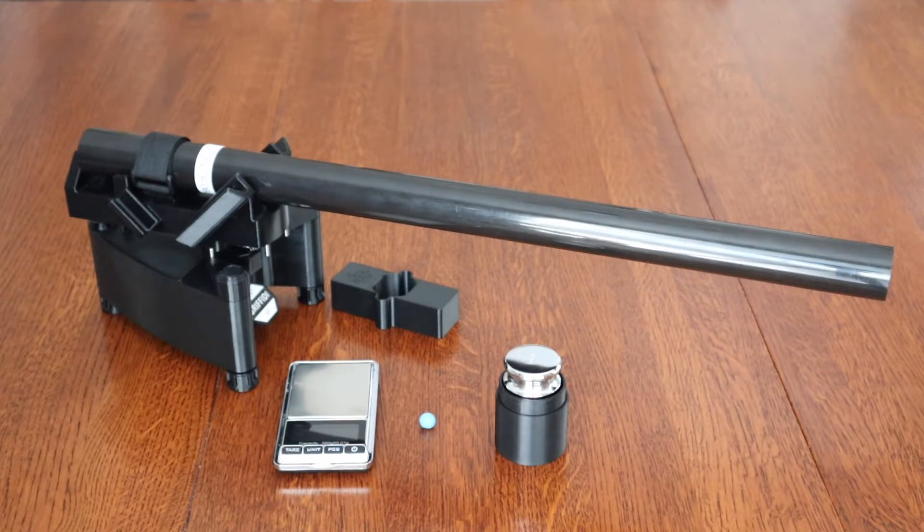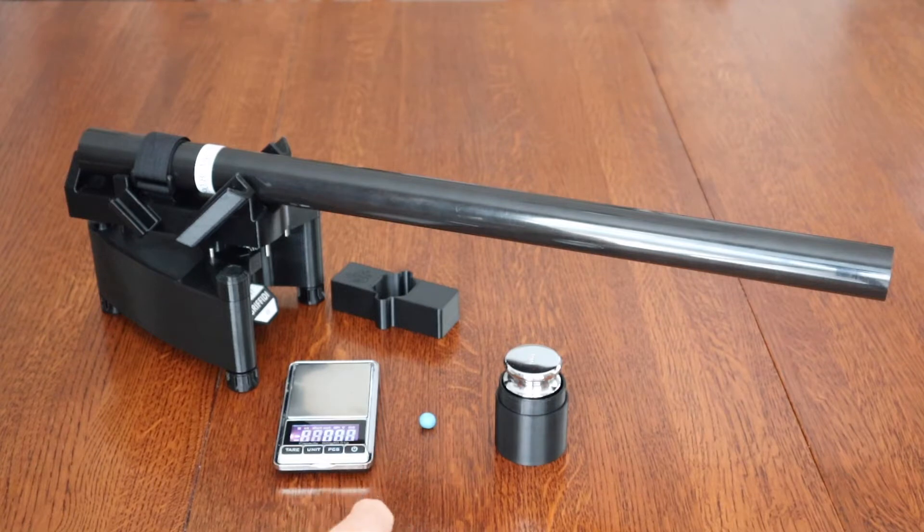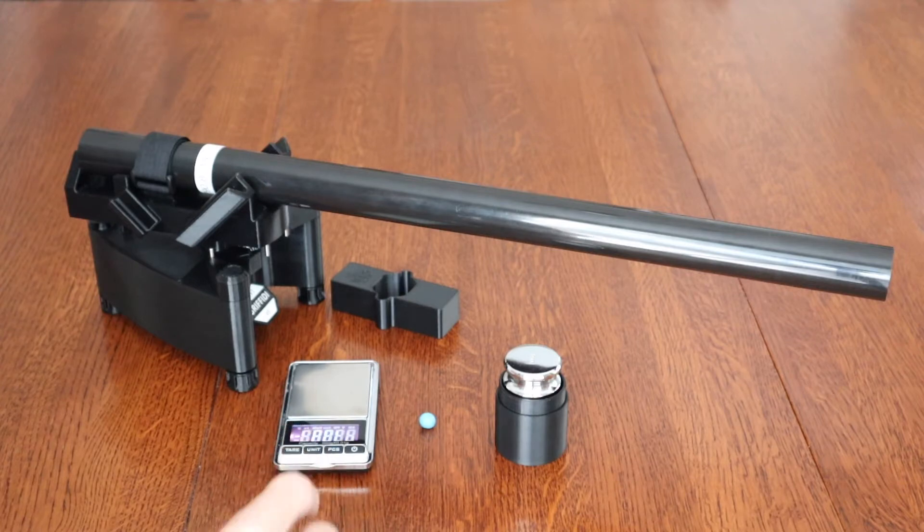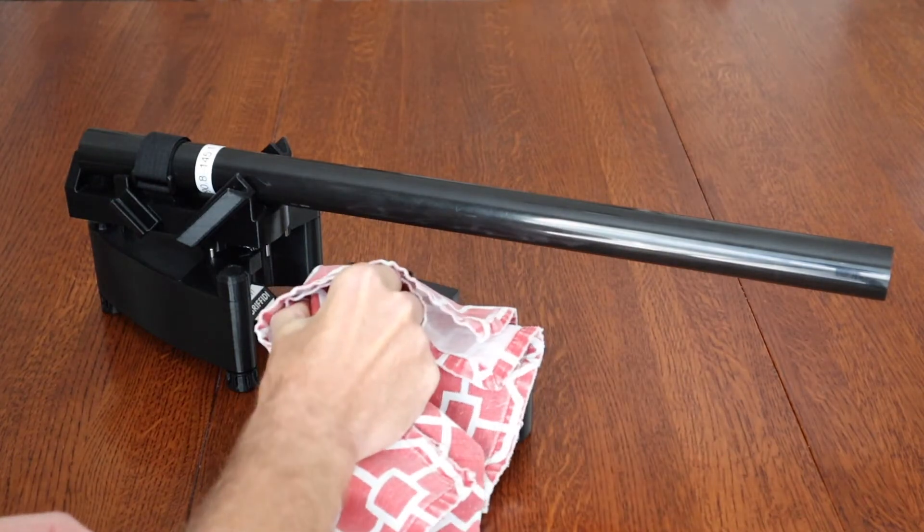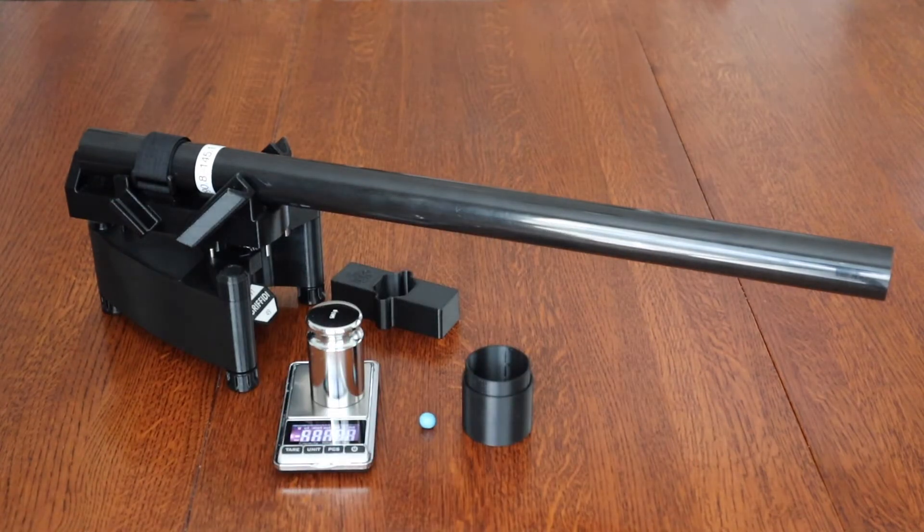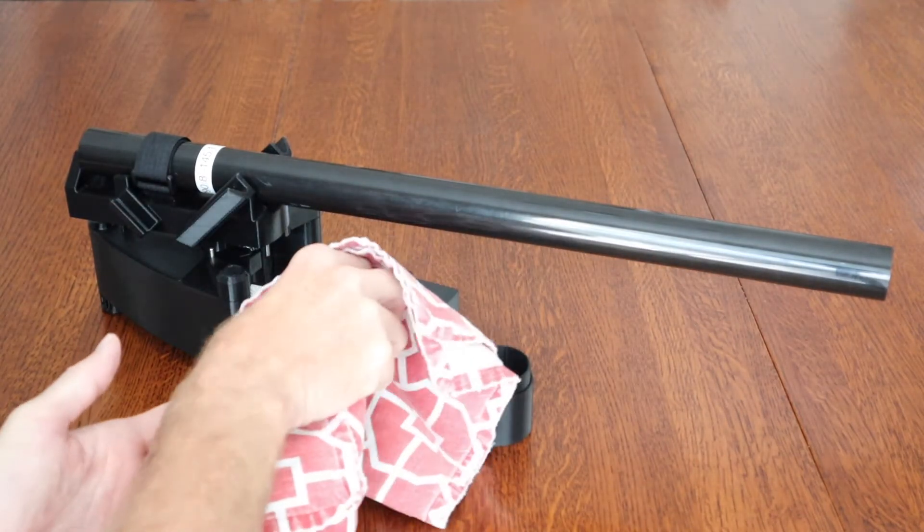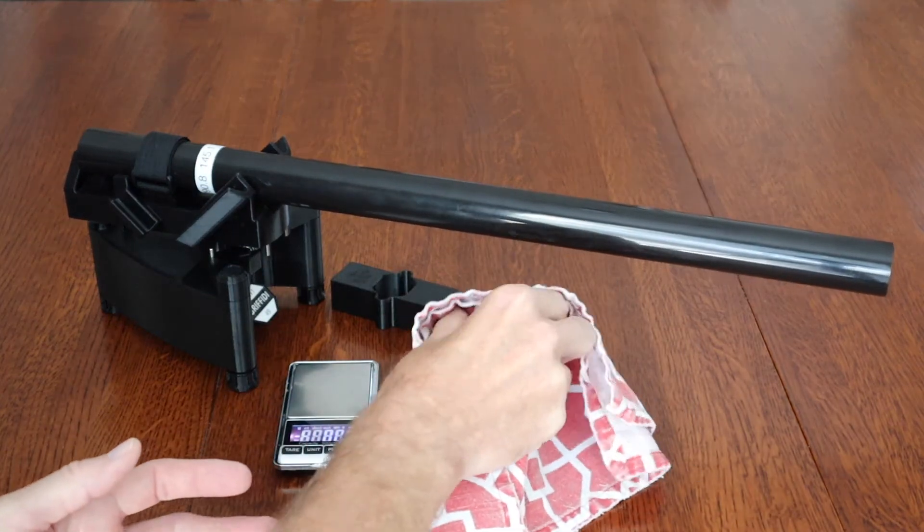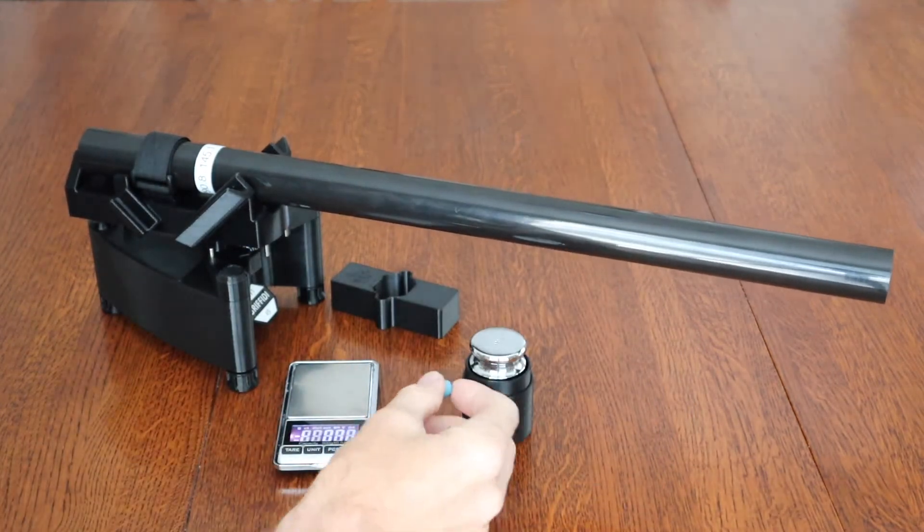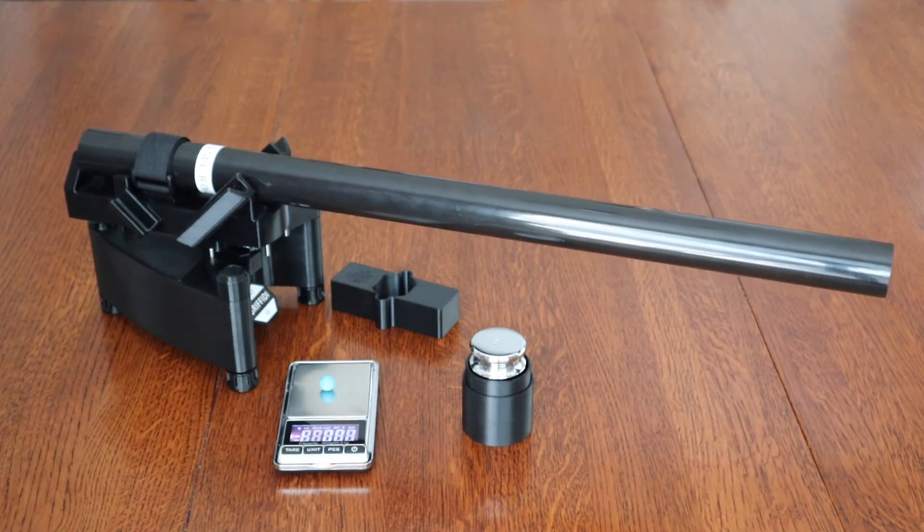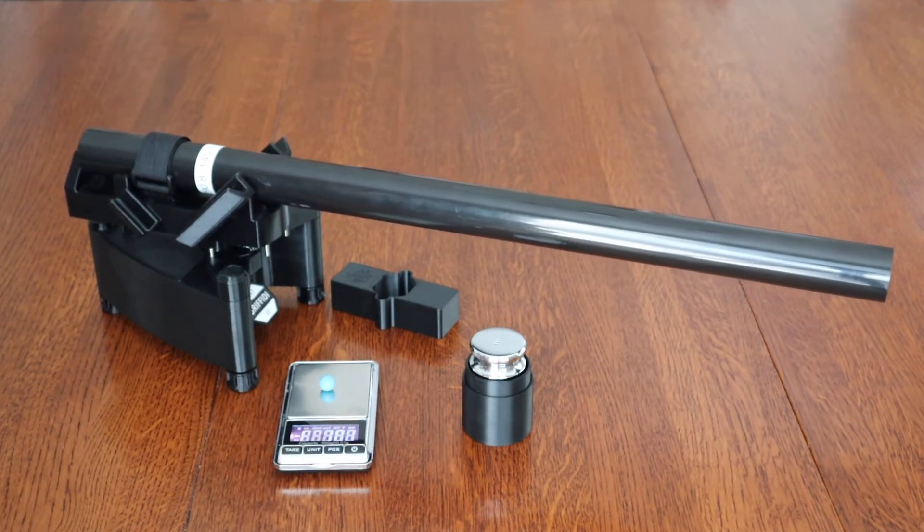So start out, I'm gonna calibrate the scale. I'm not sure if this will show up but it's going through the calibration procedure here. Add the 500 gram calibration weight and then measure the ball. So that's exactly 1.00 grams on this scale.